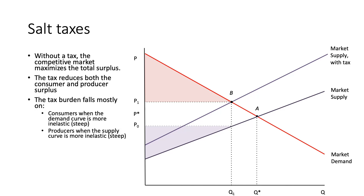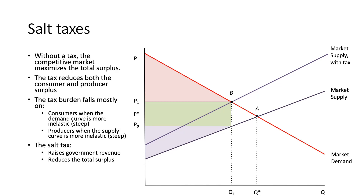Producers bear most of the burden when the supply curve is more inelastic — if producers face similar constraints they will take on most of the burden. The salt tax raises government revenue equal to a rectangle on the graph. Consumers and producers have both lost out on this rectangle, which is now sent to the government as revenue. The tax also reduces the total surplus, and the small triangle between point A and point B represents the deadweight loss created by the salt tax.